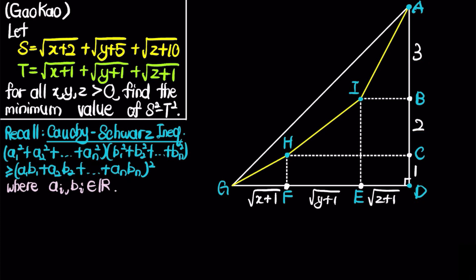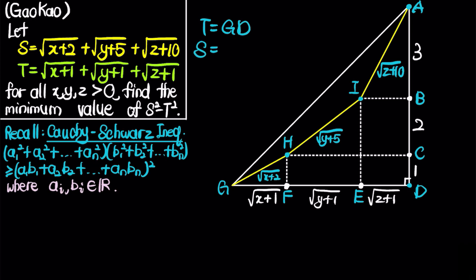By connecting lengths AI, IH, and HG, we find that AI = √(z+10) because it equals √((z+1) + 9) = √(z+10). Similarly, IH = √(y+5) and HG = √(x+2). From this diagram, T equals the length GD, and S equals the total path length AI + IH + HG.